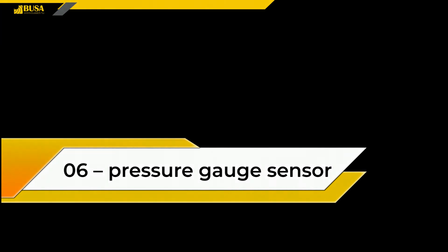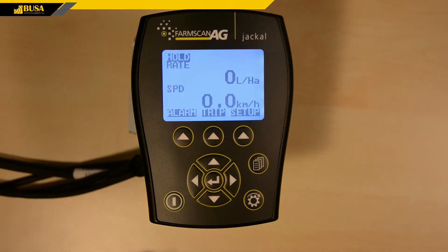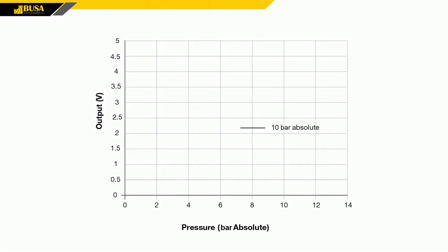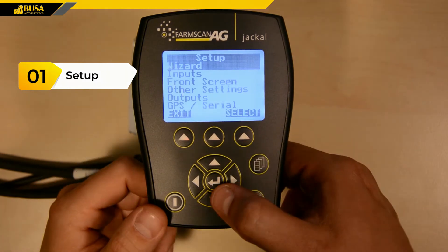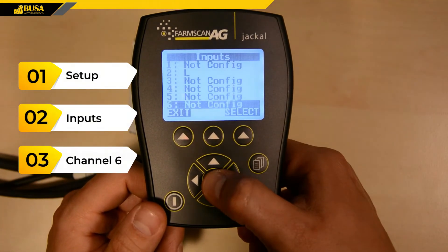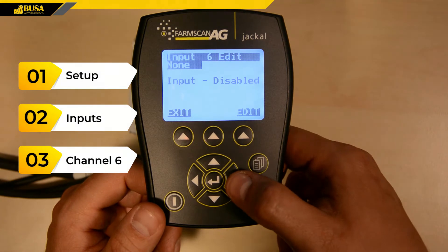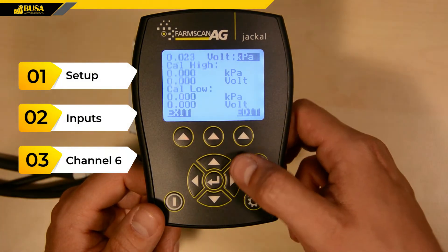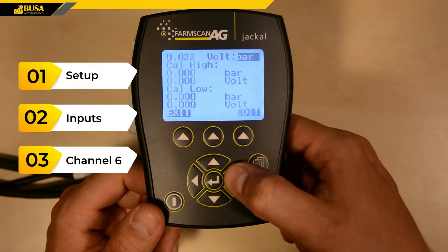A Pressure Gauge Sensor can be hooked up to the pressure input marked 6. The values can be found on the datasheet for the sensor. In our case, the 10 bar sensor at 0 bar pressure gives a signal of 0.5 volts output voltage, whereas 10 bar pressure gives 4.5 volts. In the Setup menu, choose the input item, then Channel 6. Set the units, then the high and low values read off from the calibration datasheet.